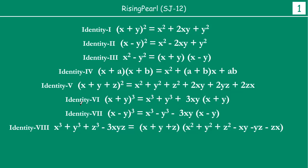Then we talk about the last three identities. Identities 6 and 7 involve cubes: (x + y)³ = x³ + y³ + 3xy(x + y), and similarly (x − y)³ = x³ − y³ − 3xy(x − y). Finally, identity 8: x³ + y³ + z³ − 3xyz = (x + y + z)(x² + y² + z² − xy − yz − zx).